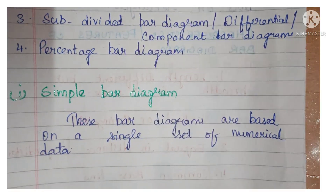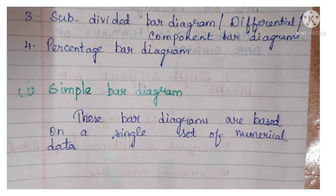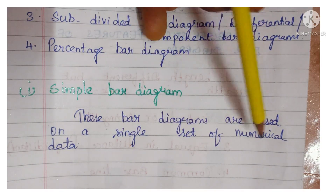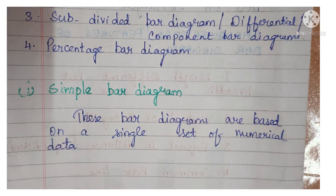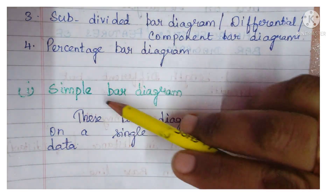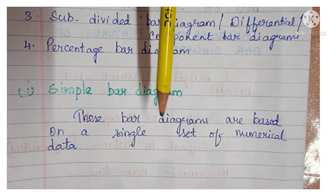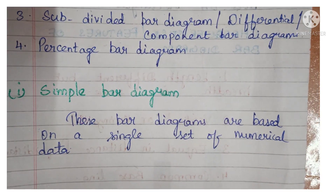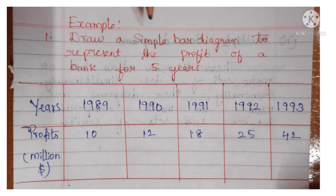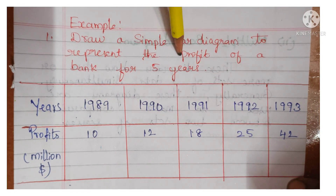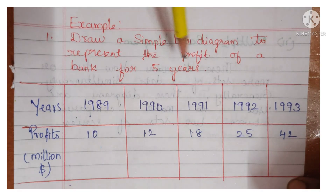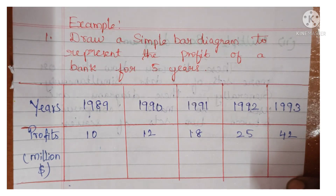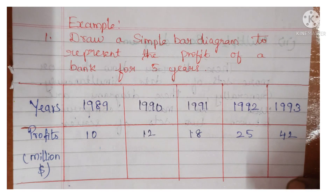First is the simple bar diagram. The name itself tells you this is the simplest type of bar diagram, based on a single set of numerical data. Only a single set of numerical data is expressed in a simple bar diagram. For example: draw a simple bar diagram to represent the profit of a bank for 5 years.